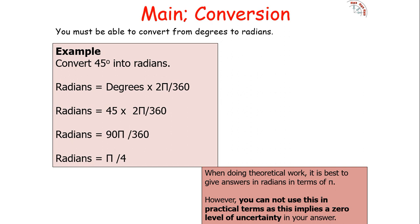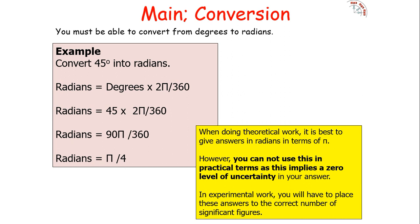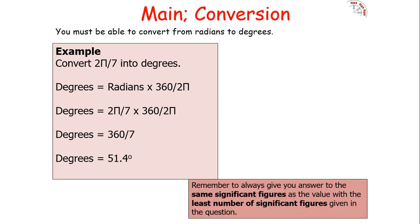In experimental work, answers must be given to the correct number of significant figures and not left in terms of π. To convert from radians to degrees: multiply radians by 360 over 2π. For example, 2π/7 × (360/2π) = 360/7 = 51.4°, given to the same number of significant figures as in the question.